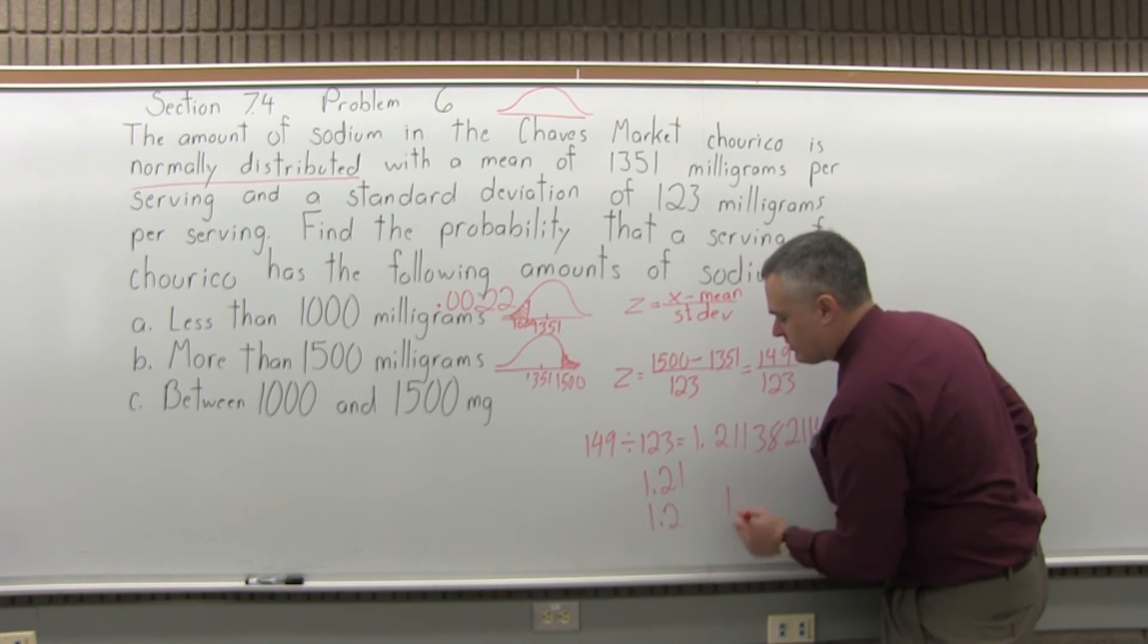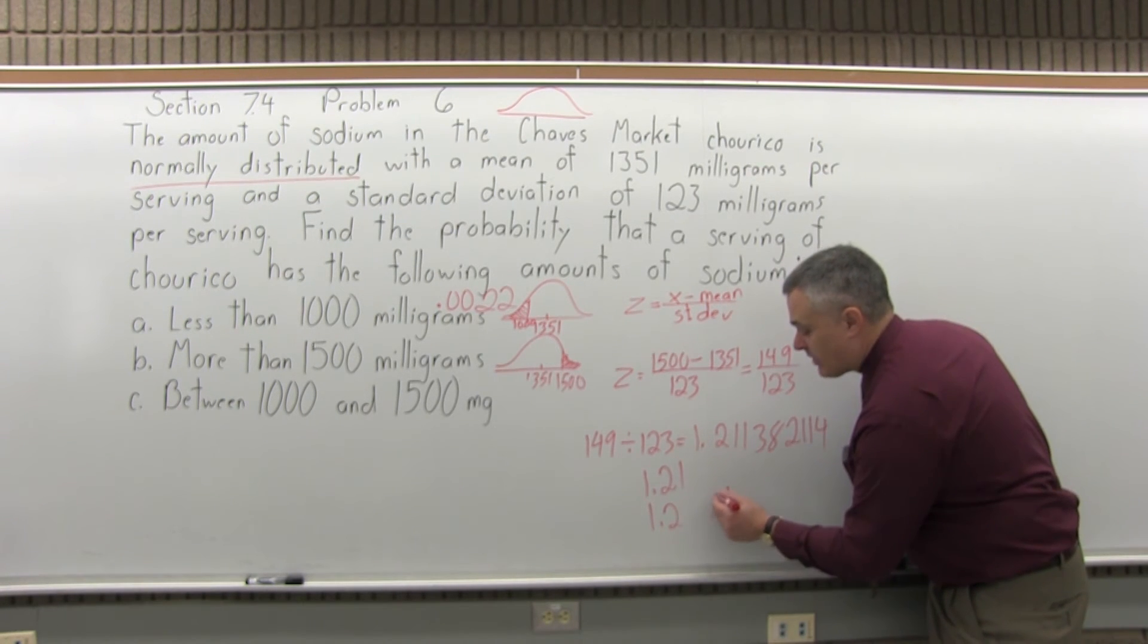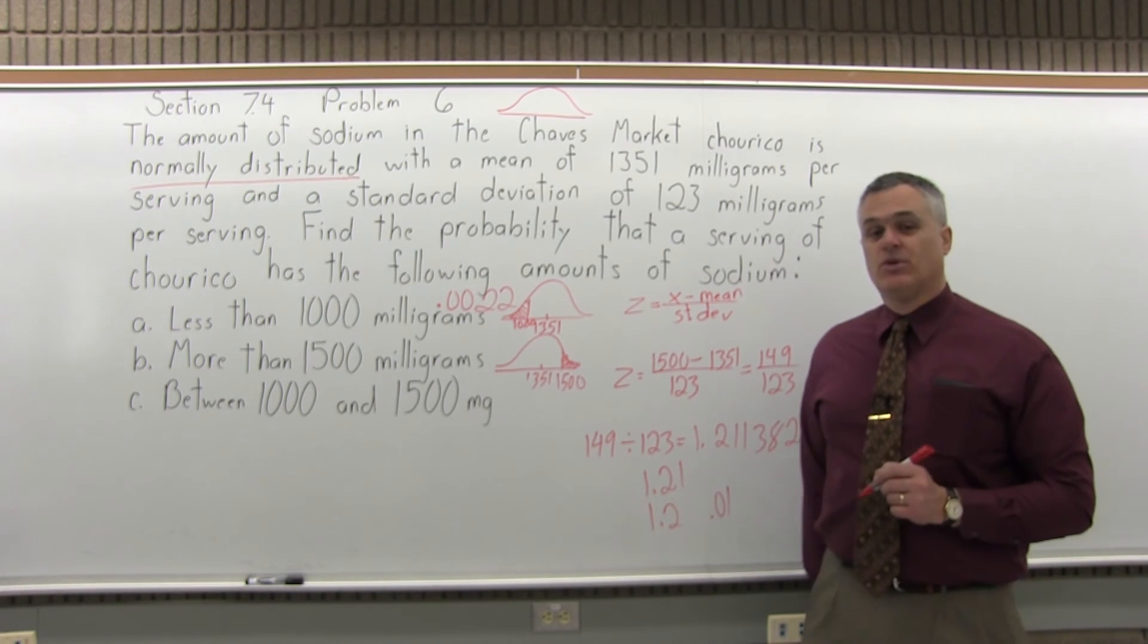It becomes 1.21 and 1. The step after that is to put a .0 in front of the rightmost digit that you pulled off.